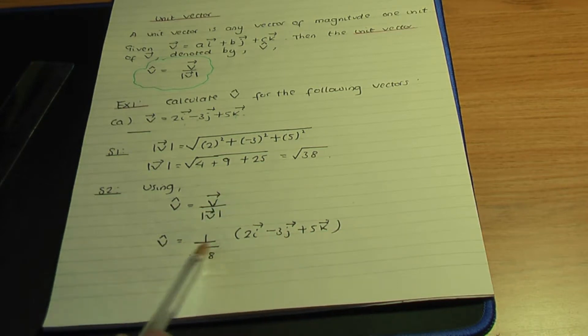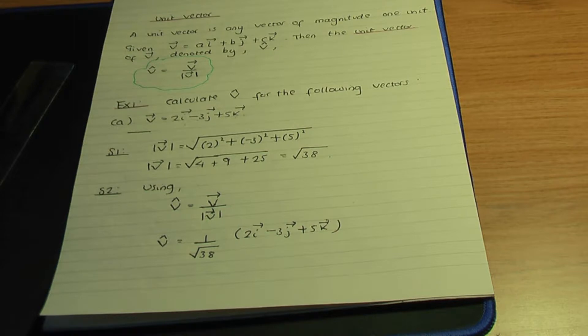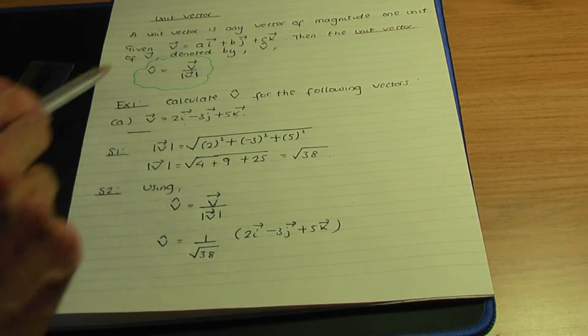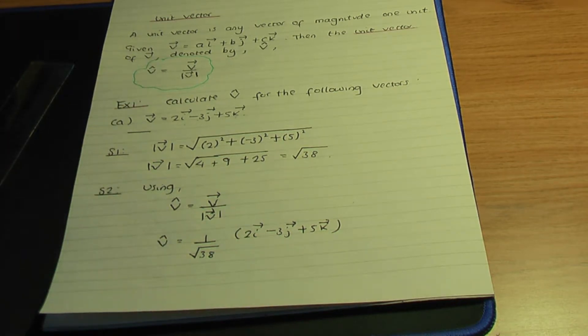You could also rationalise this to get rid of the root in the denominator, but I'll leave it like that. The method breaks into two steps: first find the modulus, then divide your vector by the modulus. Let's try another example. In part b, the vector v is given by 3i minus 2j plus 4k.